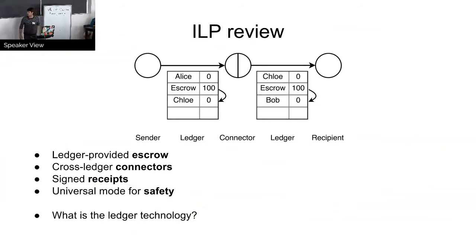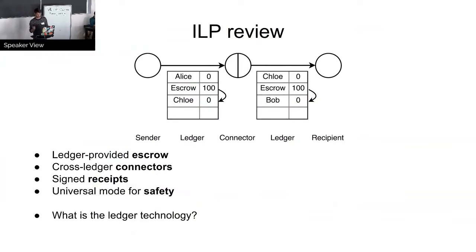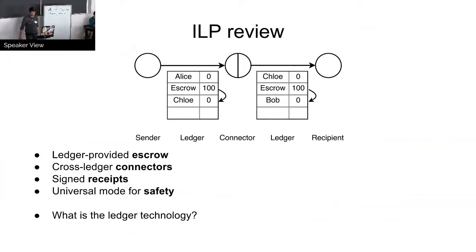Now, a quick recap — we already saw this today. Basically, the Interledger relies on a few components. The main one is probably the ledger-provided escrow. Then you have these connectors which have accounts on both ledgers. Once they receive payment, there should be some kind of signed receipt to receive settlement across these payments. We started with the universal mode because we thought it's maybe a bit safer not to rely on external notaries, and it looked a little bit more simple.